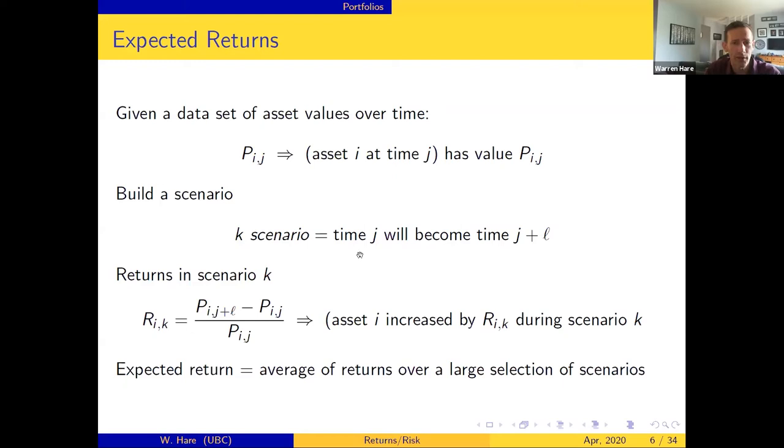The next thing we do is we take all of this data and we build a bunch of scenarios. So each scenario represents moving time from point j to point j plus l for asset i. We build lots and lots and lots of different scenarios for each asset - the bigger this data set p_ij is, the more scenarios we can build. Taking all of those scenarios we can build returns. So the returns in scenario k for asset i is just your closing price minus your opening price, and then we normalize by dividing by our opening price. If this number is positive the asset made money during scenario k, if this number is negative the asset lost money. Your expected returns you just take the average over a large number of scenarios.